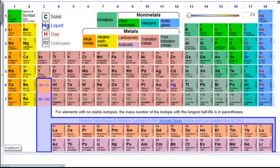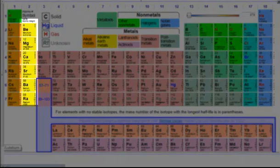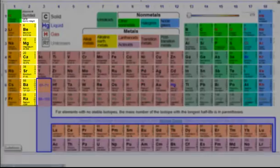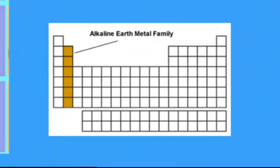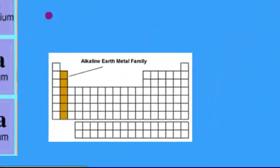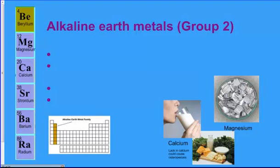That covers the first group — the alkali metals shown in orange on the periodic table. The second group, group two, is called the alkaline earth metals, shown in the yellow column. Alkaline earth metals are located in the second column over on the left. The elements in this group are beryllium, magnesium, calcium, strontium, barium, and radium.